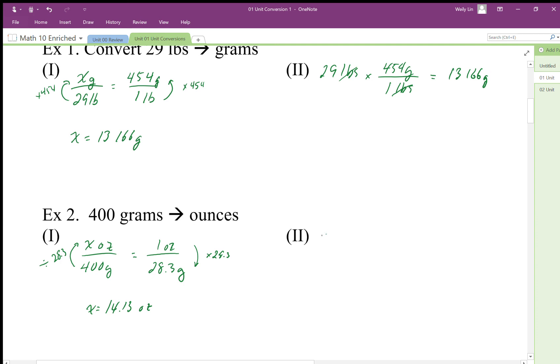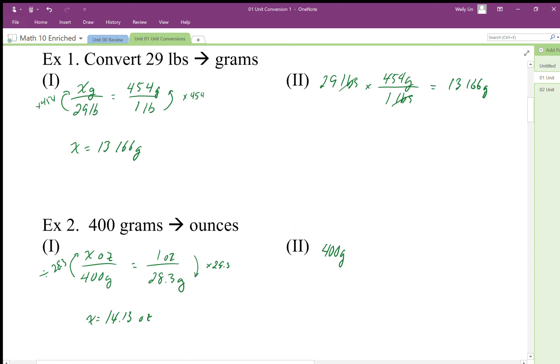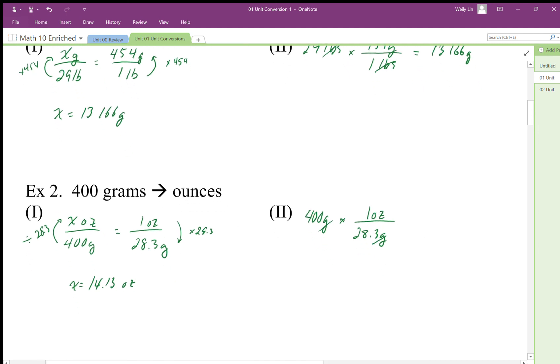We could do the same thing here by starting with our 400 grams. We're going to use our conversion rate, so we end up with 28.3 grams for one ounce. The grams cancel out.